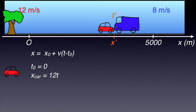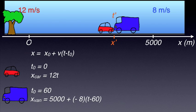The blue van sets off one minute later, and thus t0 equals 60 seconds. As the van moves in the negative direction of the axis at 8 m/s, v is minus 8.